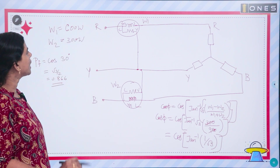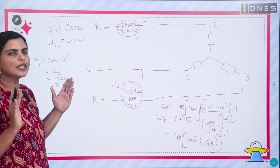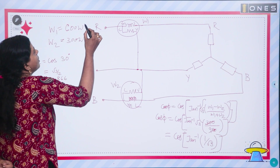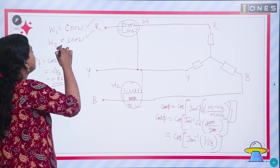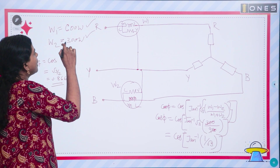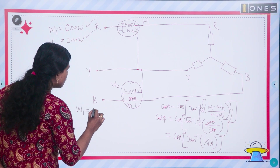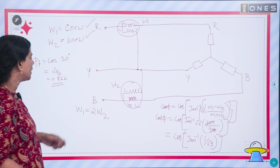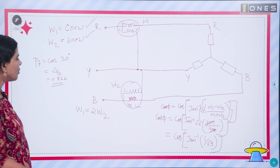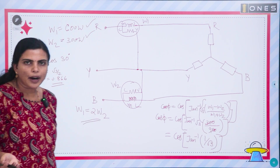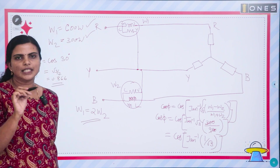For competitive exams, the key point here is: if one wattmeter reading is twice the other wattmeter reading — that is, W1 equals 2 times W2 — then the power factor of the circuit will be 0.866 and the power factor angle will be 30 degrees.